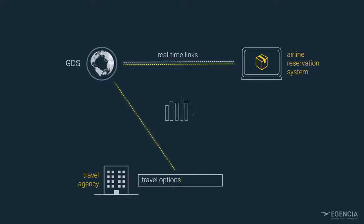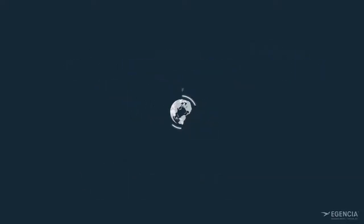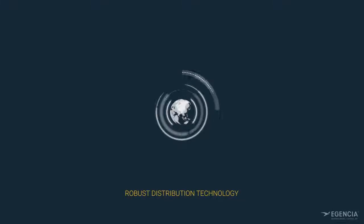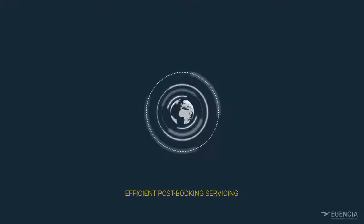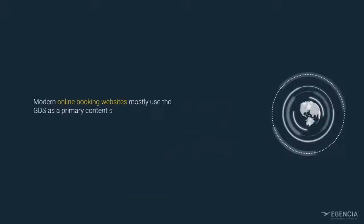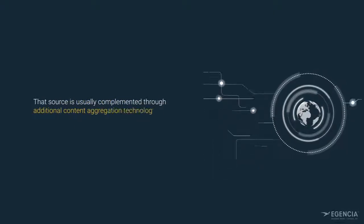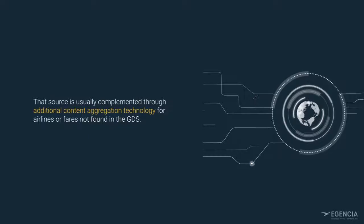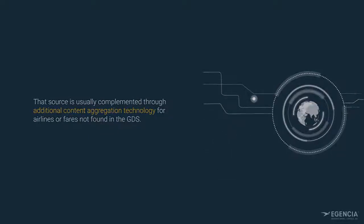This enables the travel agent to compare various flights and associated add-ons, like bags, from all the vendors who are part of that GDS network. GDS provide robust distribution technology with sophisticated search capabilities and efficient post-booking servicing. Therefore, modern online booking websites mostly use the GDS as a primary content source for flights.